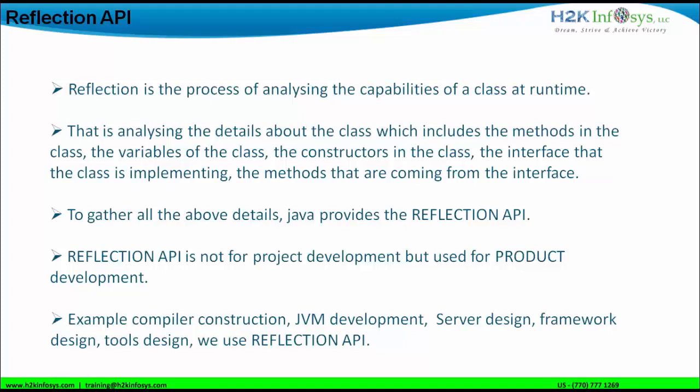How would a compiler know that private variables must be used only in the class in which they are created? It is because of the Reflection API present inside the compiler. Similarly, how would the compiler in JVM know that an outer class should be public whereas an inner class can be private? It knows because these rules — for a class, method, constructor, or variable — are defined in the compiler. So if we write invalid code, immediately the compiler will show a syntax error. That is done because there is a Reflection API implemented inside the JVM's compiler.